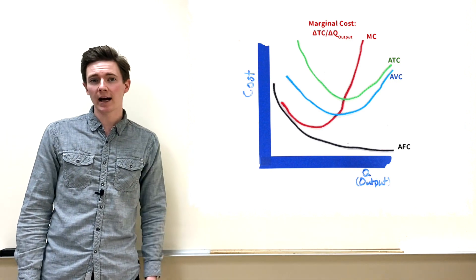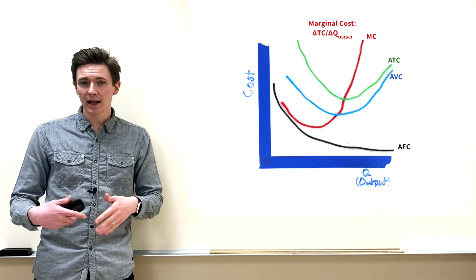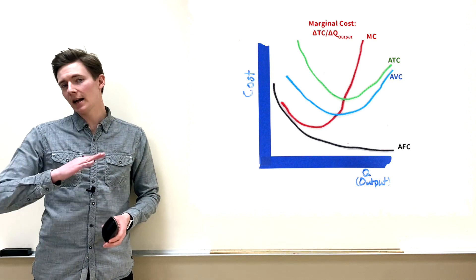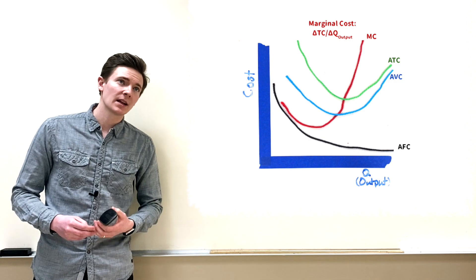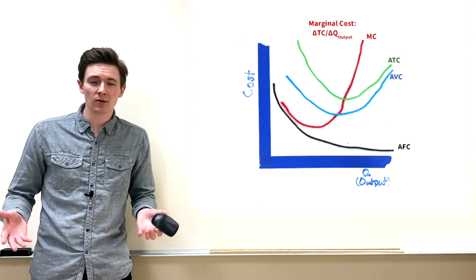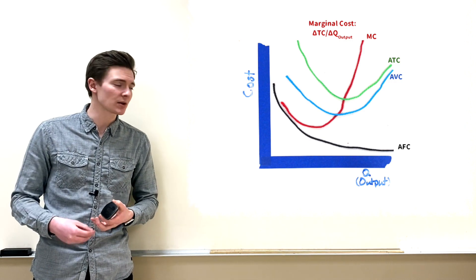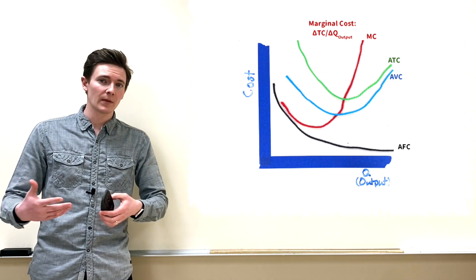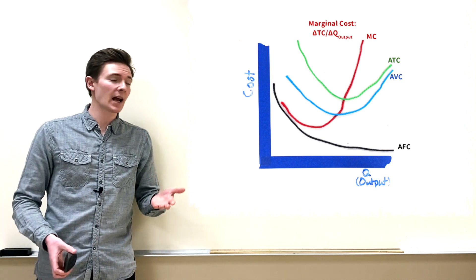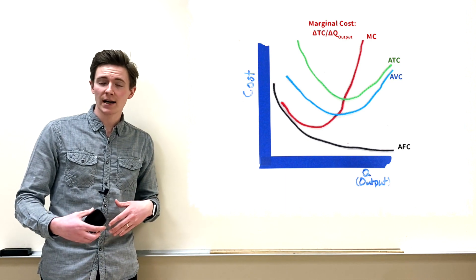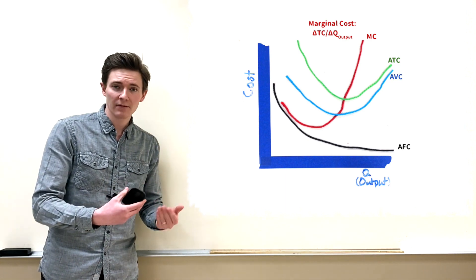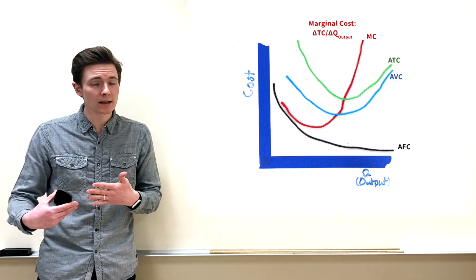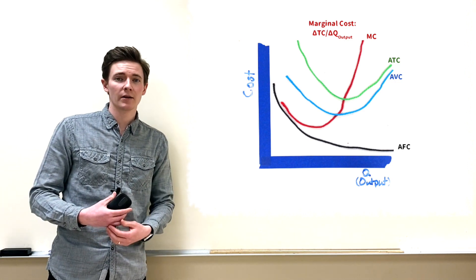Continuing the GPA analogy — if you then have a really good semester and get a 4.0, that raises your average. Similarly, if marginal cost is above your average total cost, it raises ATC; if it's above your average variable cost, it raises AVC.